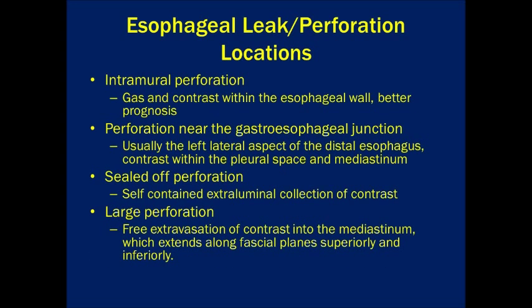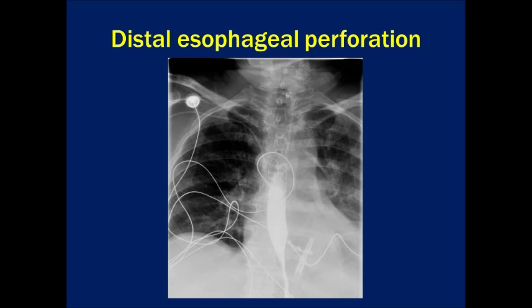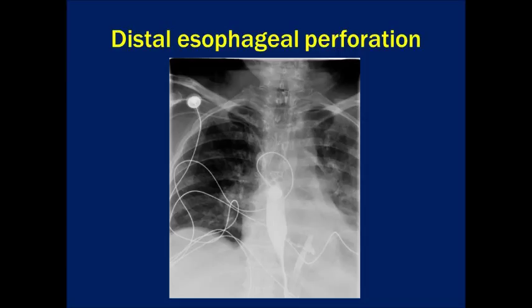There are multiple locations and types of esophageal perforations and leaks. The following slide has a list of these leaks which can be browsed at the viewer's leisure. Here is a nice example of a positive esophageal leak study. As you can see, there is extravasation of contrast from the esophageal lumen to the left of the gastroesophageal junction — a very common location.